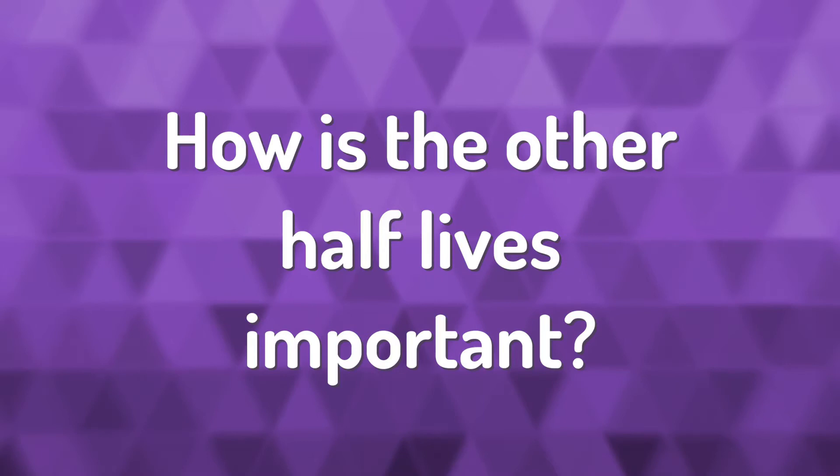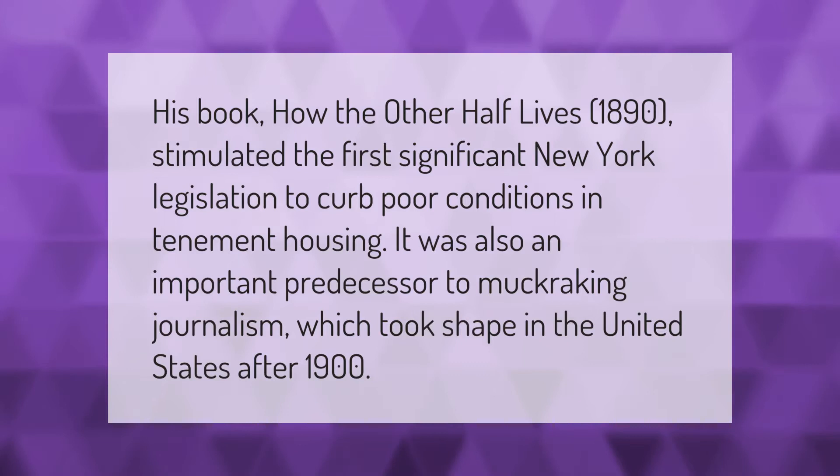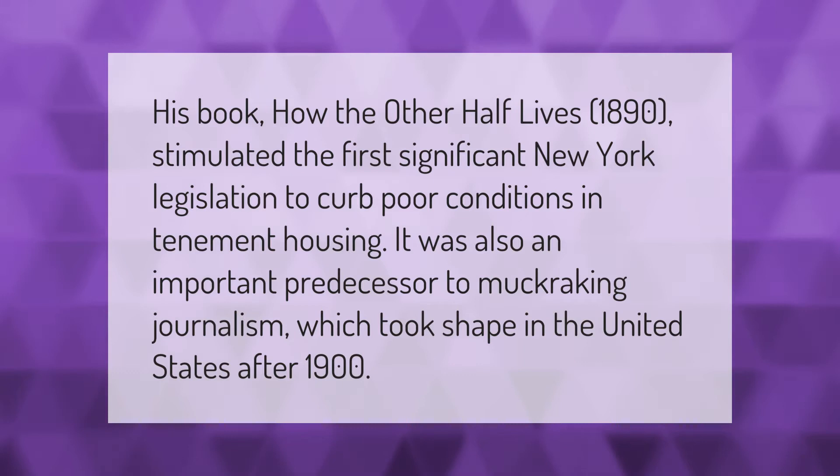His book How the Other Half Lives (1890) stimulated the first significant New York legislation to curb poor conditions in tenement housing. It was also an important predecessor to muckraking journalism, which took shape in the United States after 1900.